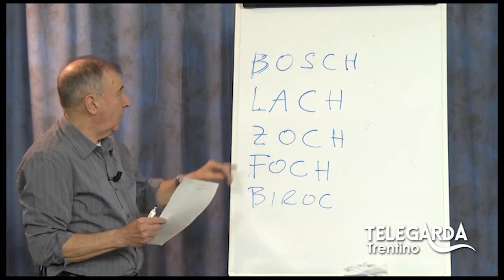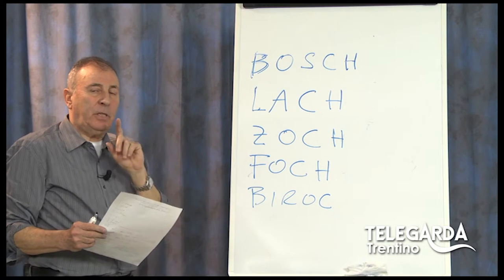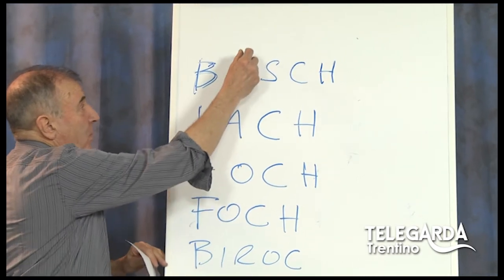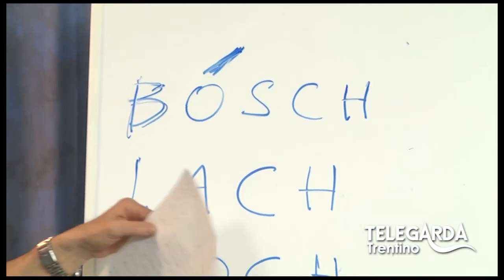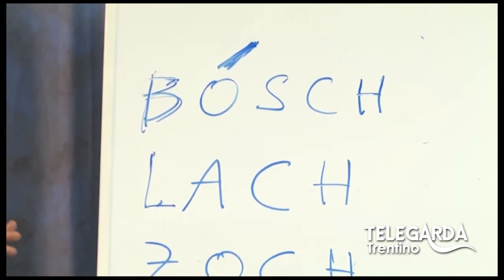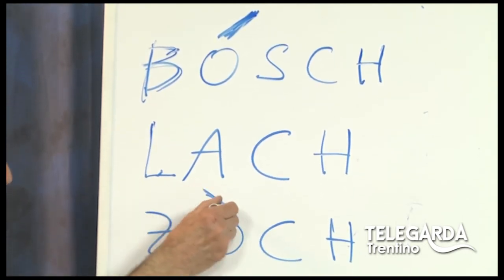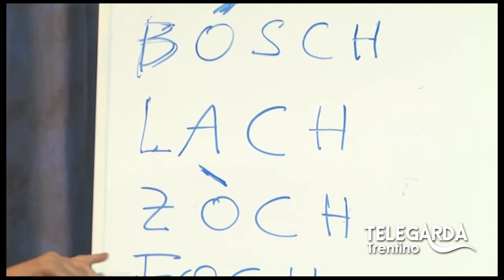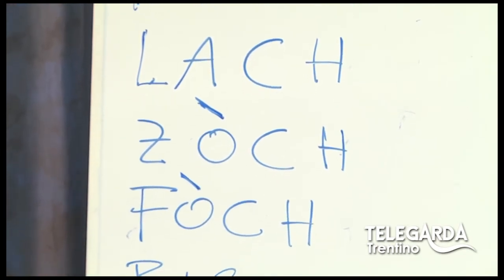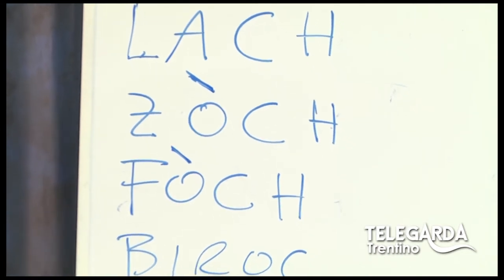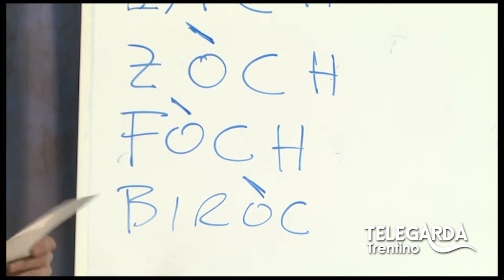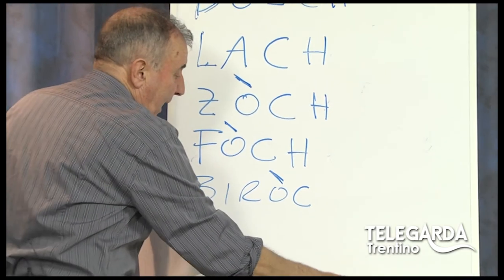Bosque — in italiano si dice bosco con la O aperta, mentre diciamo il bòsque. Allora ci metto l'accento fonico chiuso. Lacque: non c'è questione di accenti, è un'unica sillaba, per cui l'accento tonico cade sulla A. Zoc: se vogliamo aiutare la pronuncia, mettiamo l'accento aperto — zòc. Foc: poi lo fog, i faggi, i foghi, sono i faggi. Invece il biròcch, occh — accento tonico sulla O e sempre accento aperto. E questa è l'altra specialità, l'altra curiosità che vi volevo proporre.